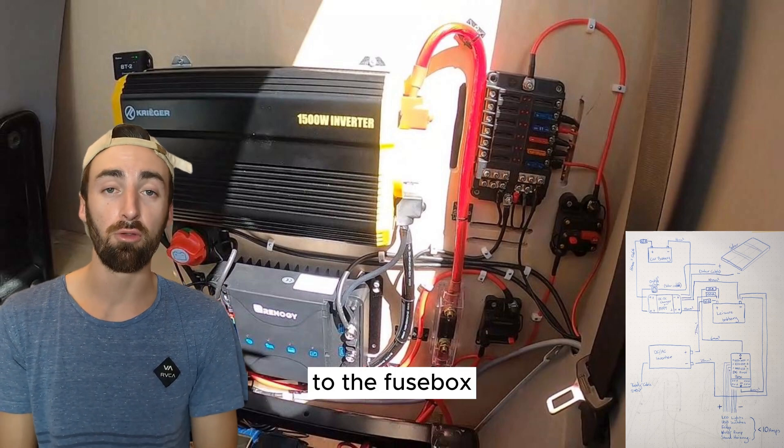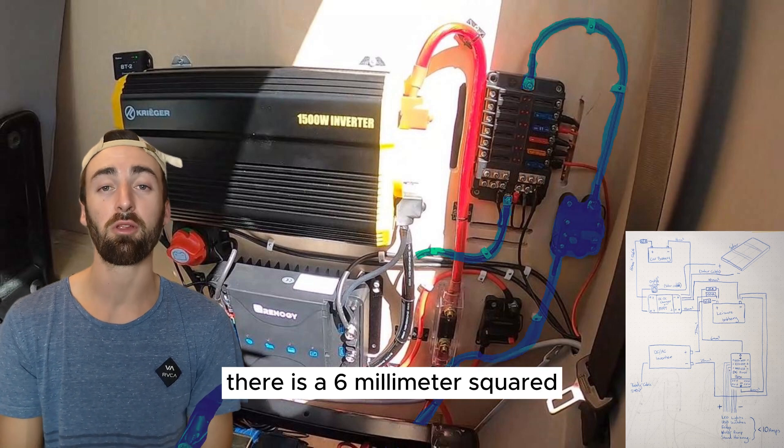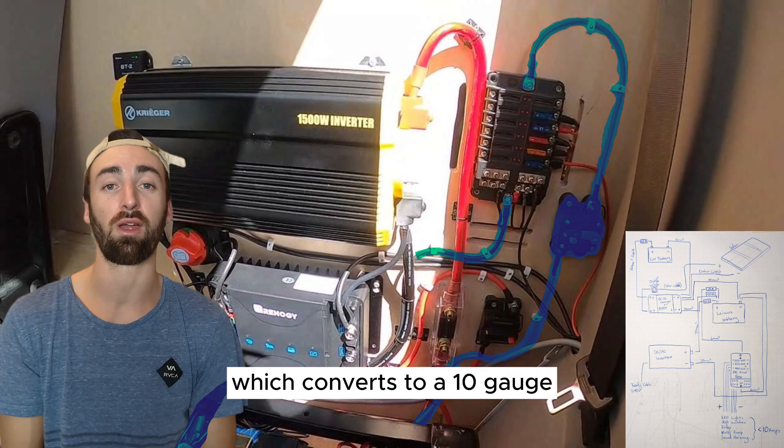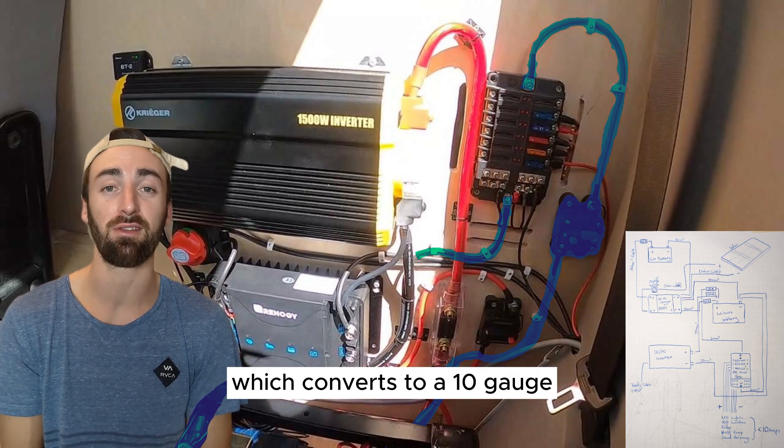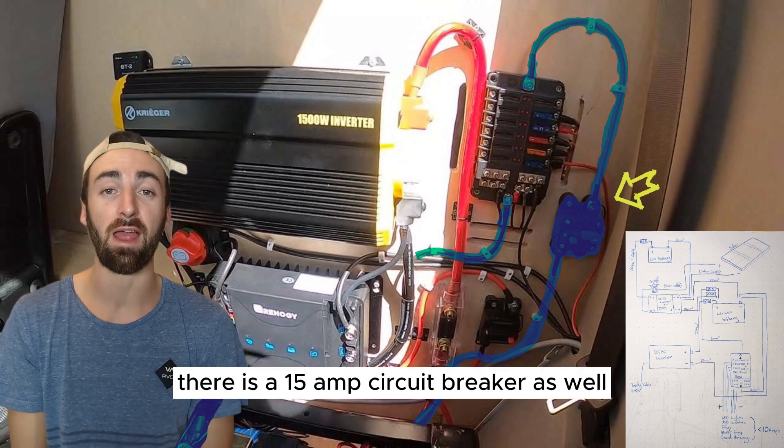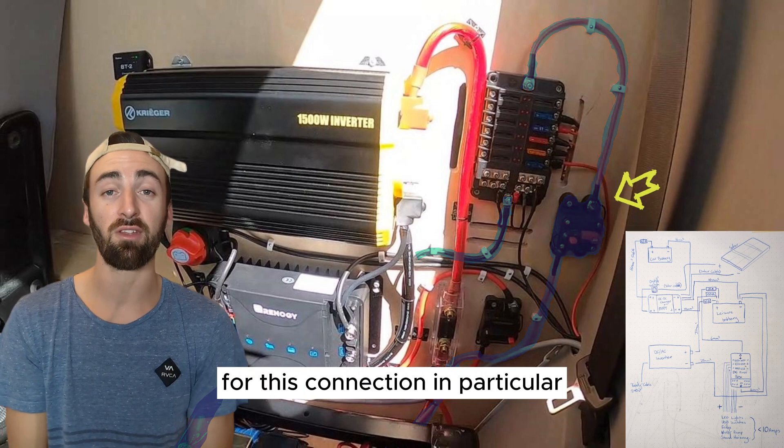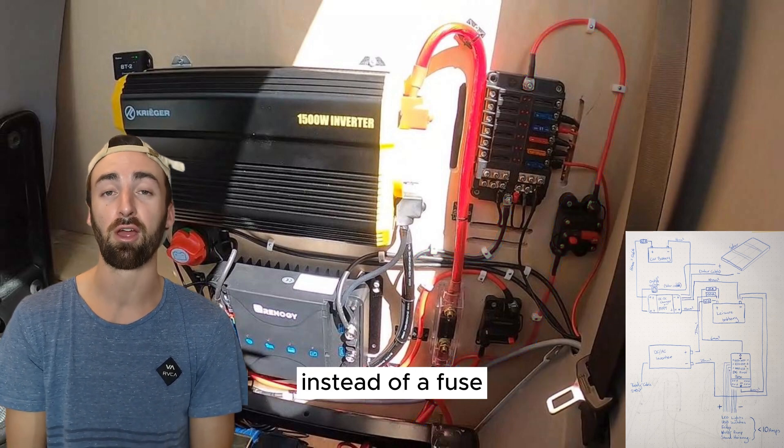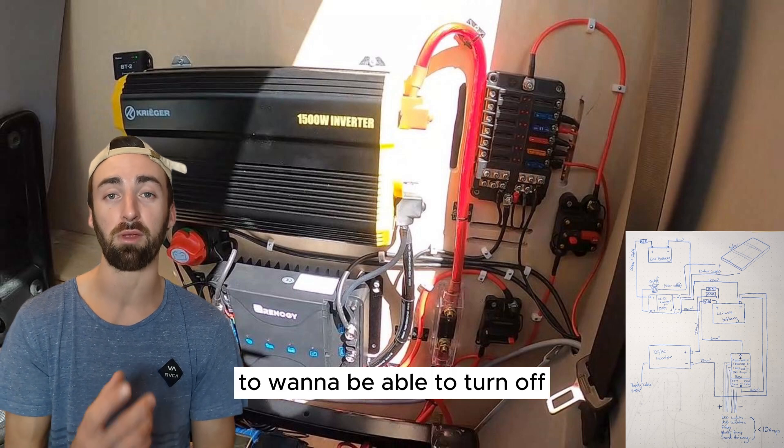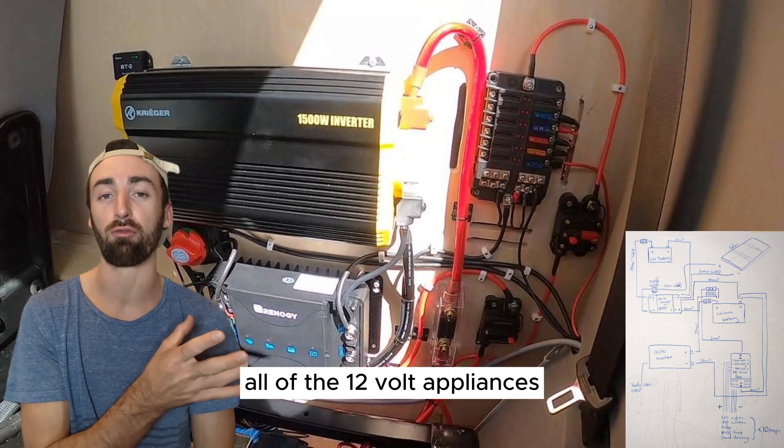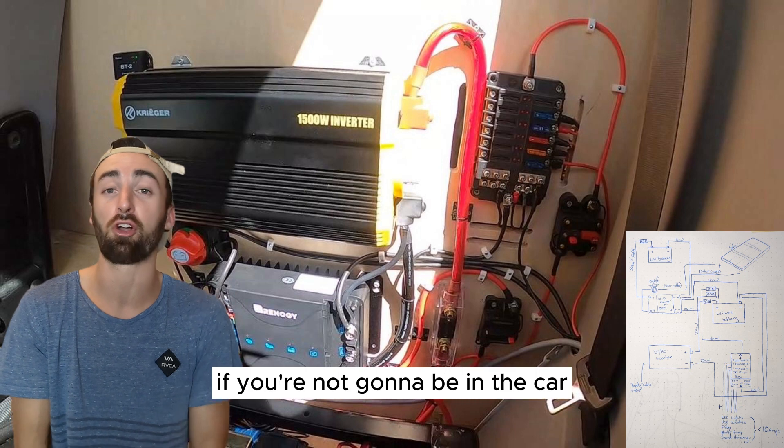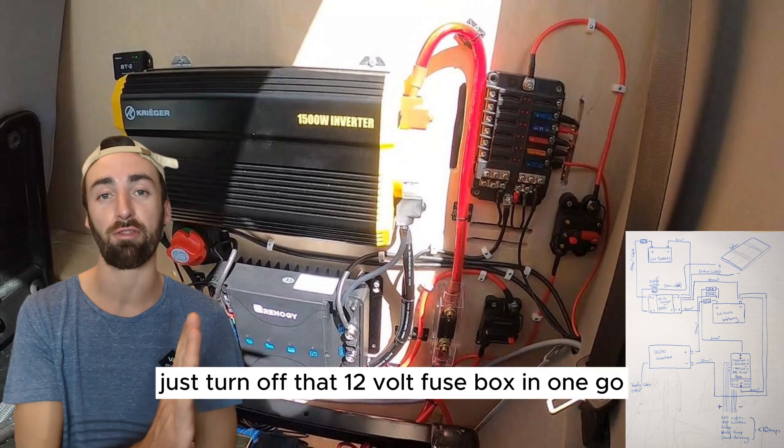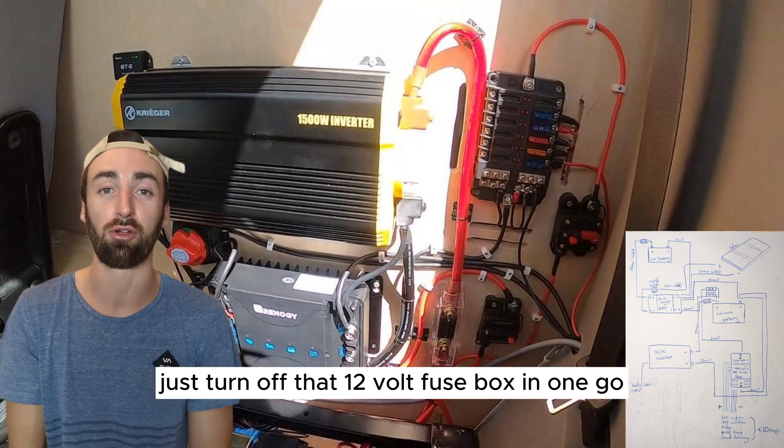From the leisure battery to the fuse box there is a 6 millimeter squared positive and negative cable which converts to a 10 wire gauge thickness. On the positive there is a 15 amp circuit breaker as well. For this connection in particular I loved that it was a circuit breaker instead of a fuse because it's quite common to want to be able to turn off all of the 12 volt appliances. For example if you're not going to be in the car for a couple of weeks or something it's really handy to be able to just turn off that 12 volt fuse box in one go.